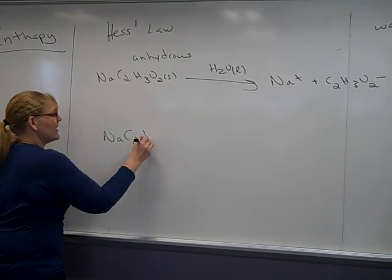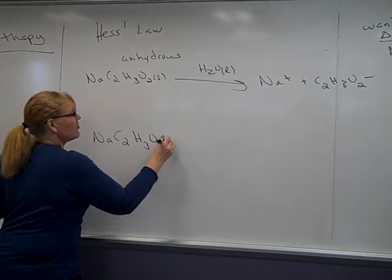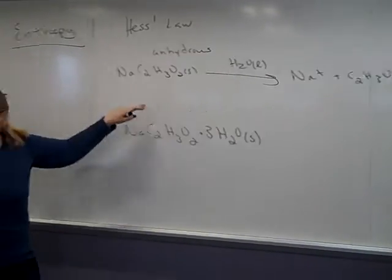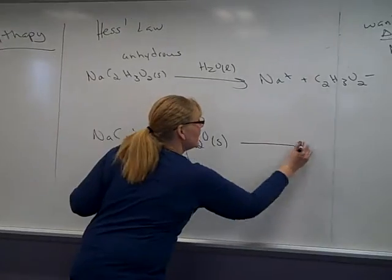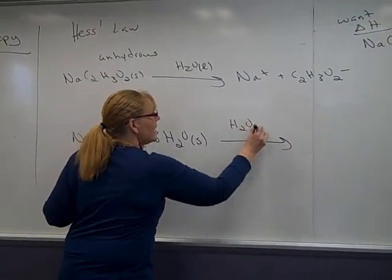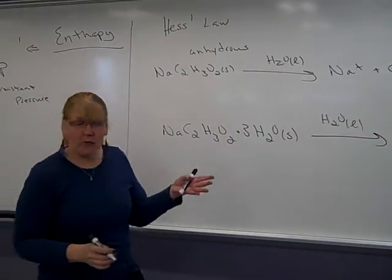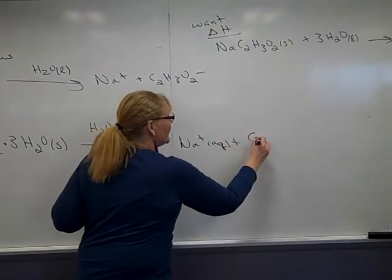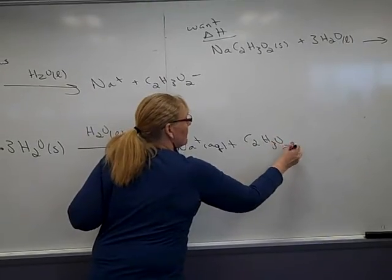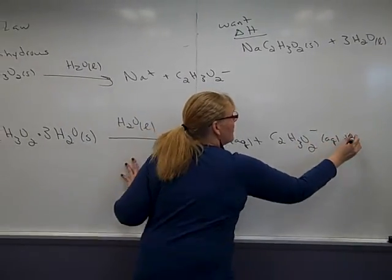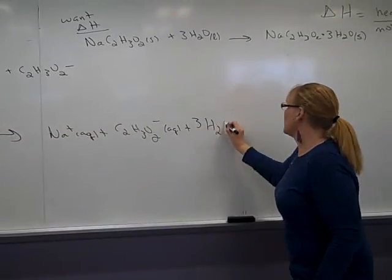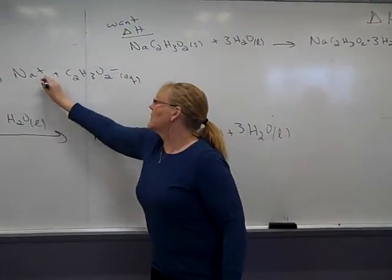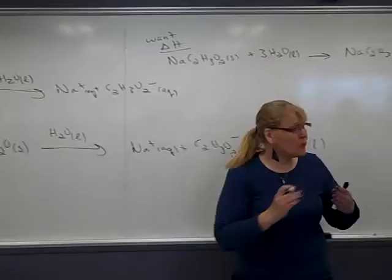And then we're going to do the sodium acetate trihydrate, which is the hydrated crystal. Note it's also a solid. We're going to put it into our water, and we're going to let it dissociate as well until we make our sodium and our acetate and our three waters.